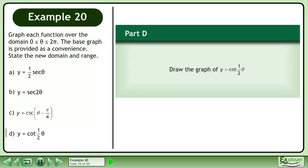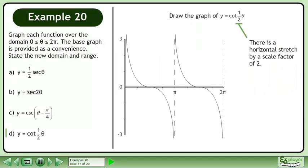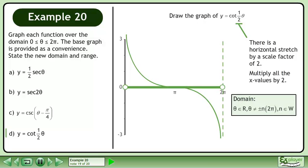In part d, draw the graph of y equals cotangent one half θ. There is a horizontal stretch by a scale factor of 2. Multiply all the x values by 2. The domain of the transformed graph is θ belongs to the set of real numbers with the restriction that θ cannot equal plus or minus n2π, where n belongs to the set of whole numbers. The range is y belongs to the set of real numbers.